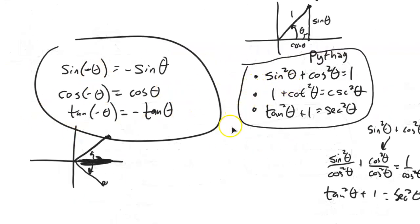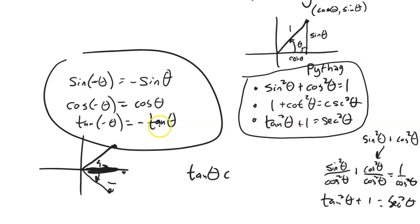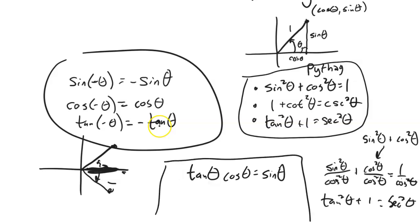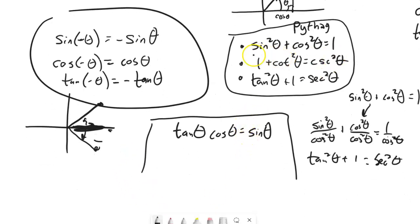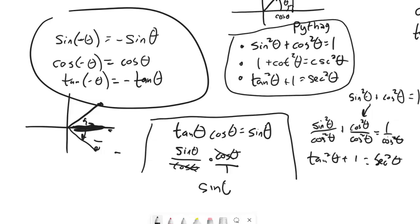With these relationships we can verify equations. For example, if I claim tangent theta times cosine theta equals sine theta — to verify, I pick one side and manipulate it. A good piece of advice: if you're not sure what to do, turn everything into sine and cosine. Tangent is sine over cosine, multiplied by cosine over one — cosine divided by cosine is 1, leaving just sine. Verified.